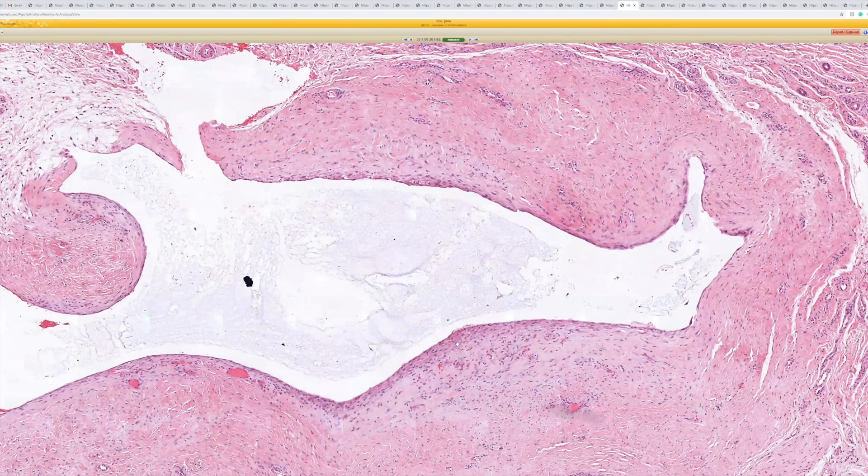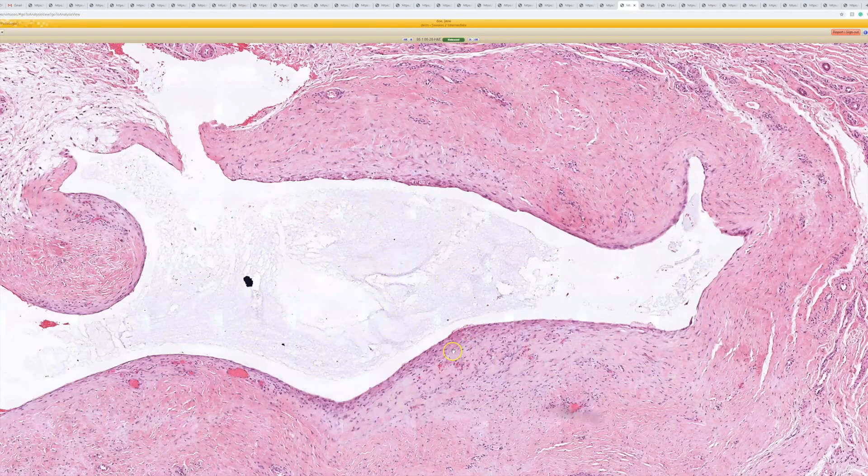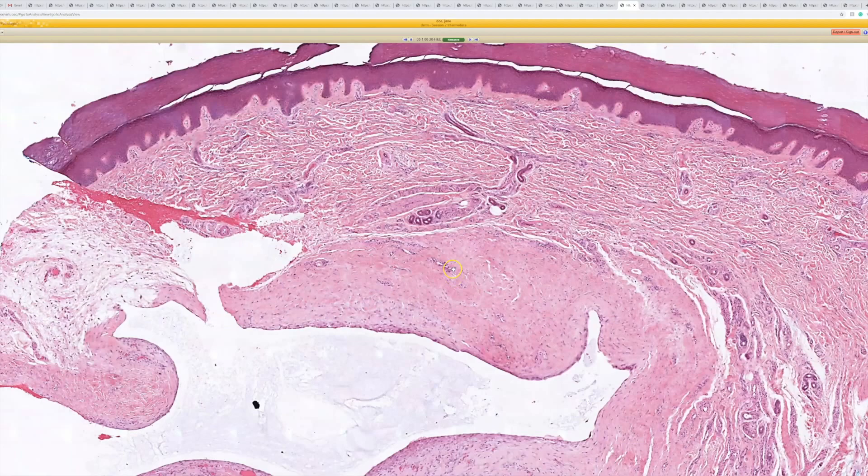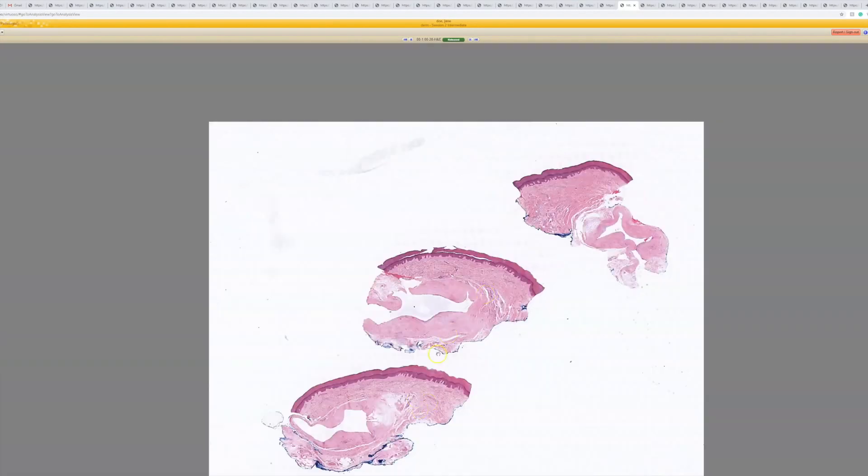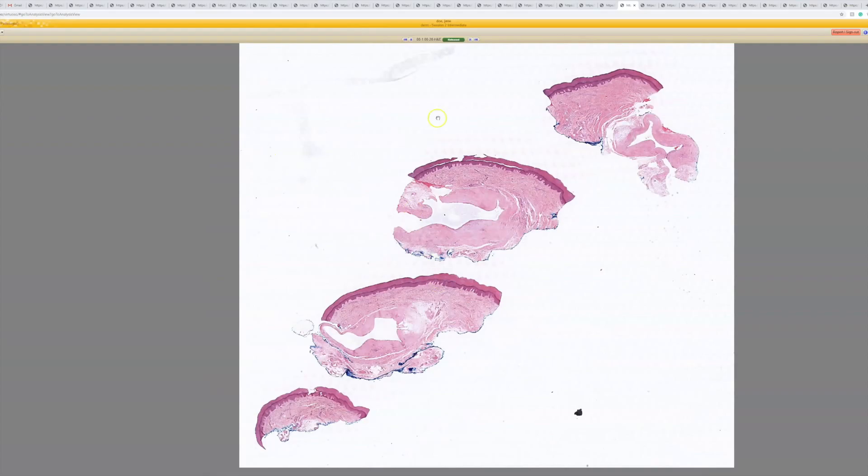Sometimes you see the cystic or pseudocystic space, as you properly said, and it's got the mucin in it. Sometimes that washes out, but all of those things, if it's on the proximal nail fold, then it's going to be a digital mucous cyst. Very good.